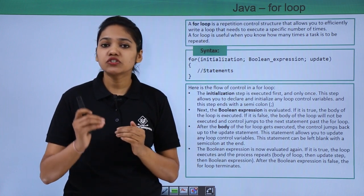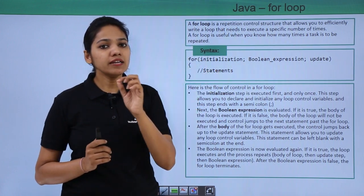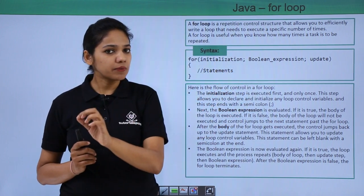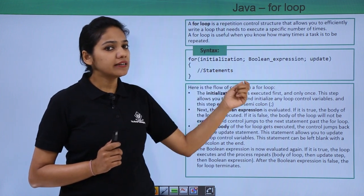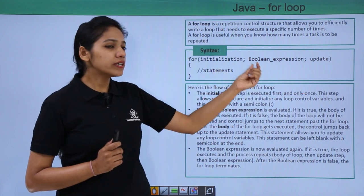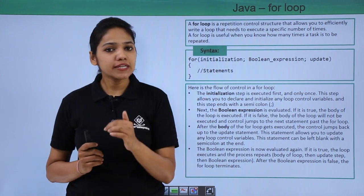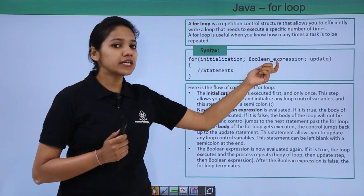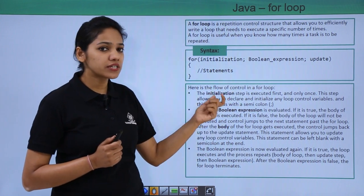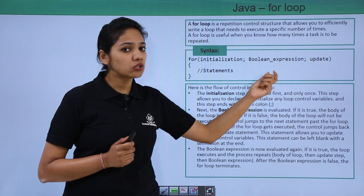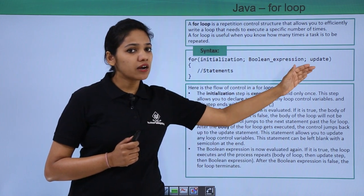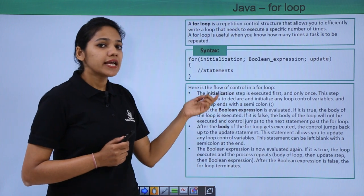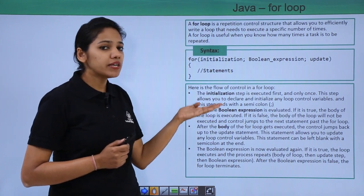So you will not be able to change the value of this variable. If i is equal to 1, that value will remain the same until the code runs a particular number of times. The next element is the boolean expression, which defines what condition is to be met. If a particular condition is true, then execute the block of statements. If the condition is not true, it will not check for the update nor execute the block of statements.